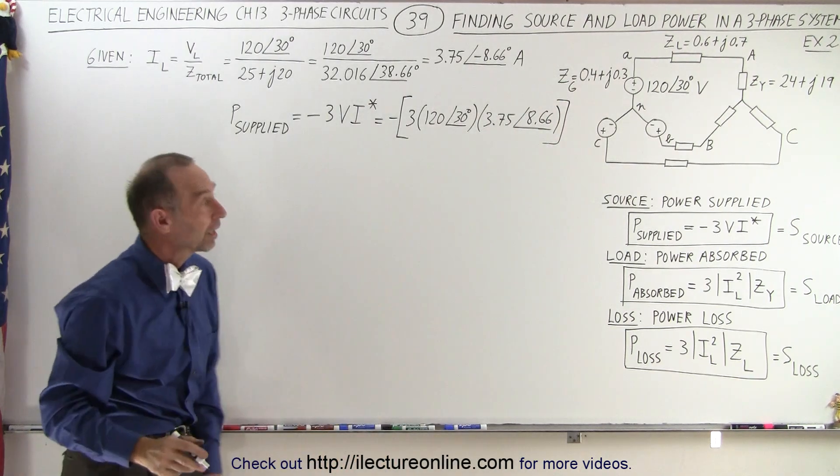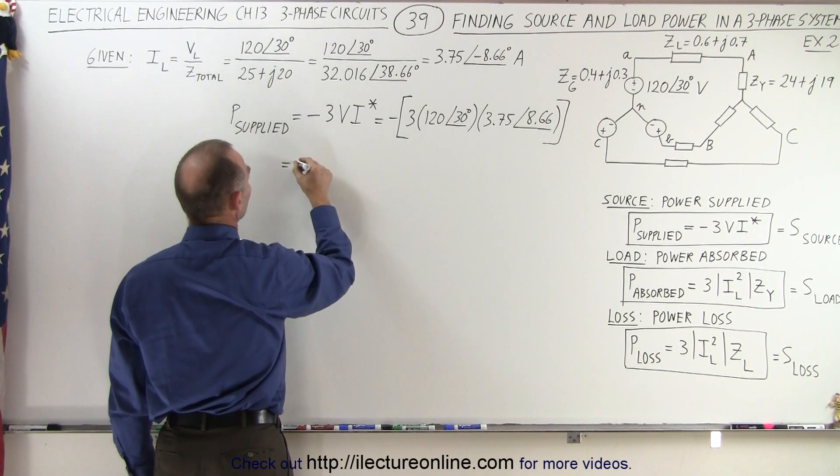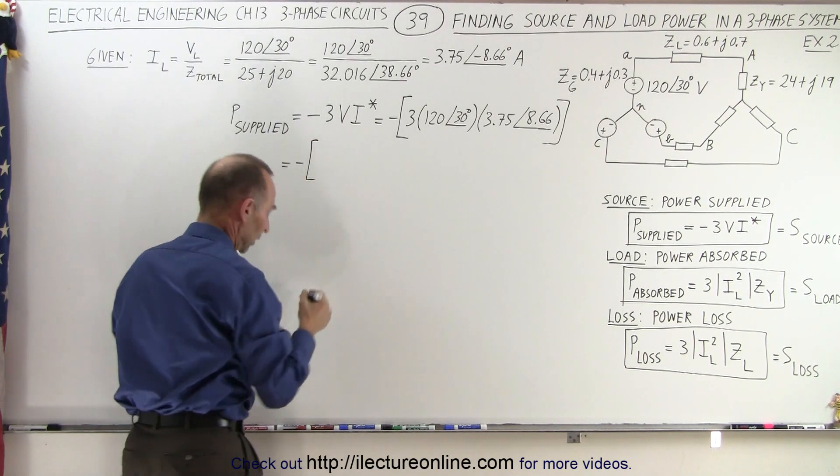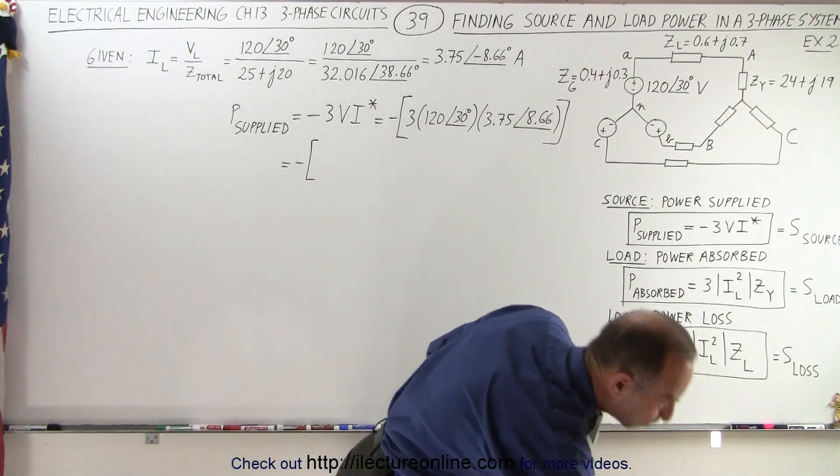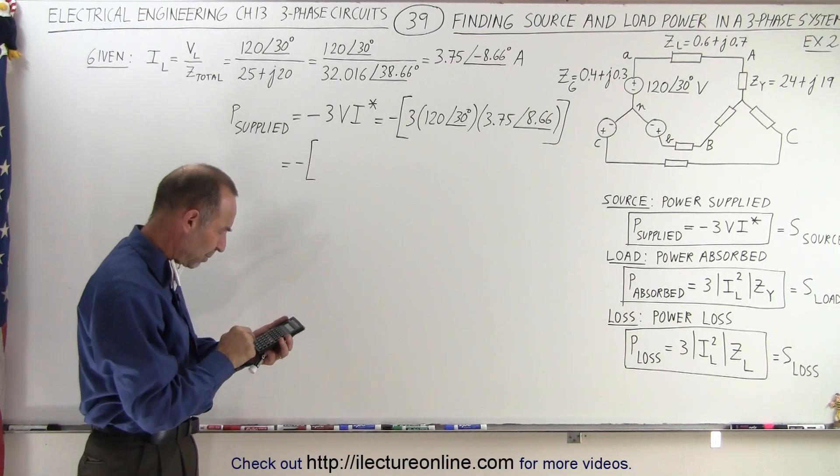Like that. And that should give us the power supplied by the source. So this is equal to a negative, and let's multiply all that out. So that's 360 times 3.75.